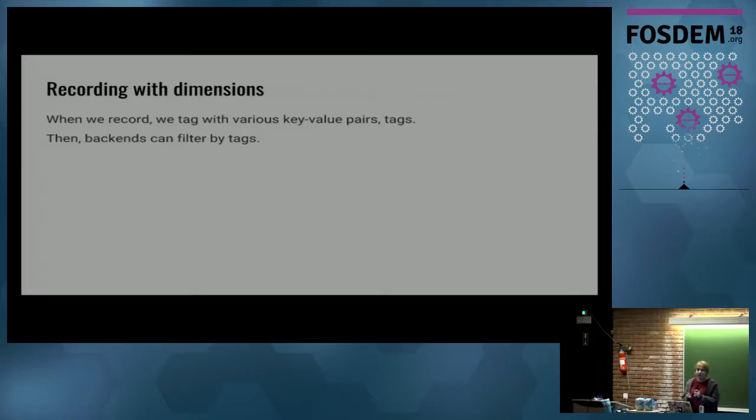The answer is we record the data with various key-value pairs. We call these key-value pairs tags at Google. And then the backend, for example, if it's a monitoring backend such as Prometheus, can filter the data by tags.